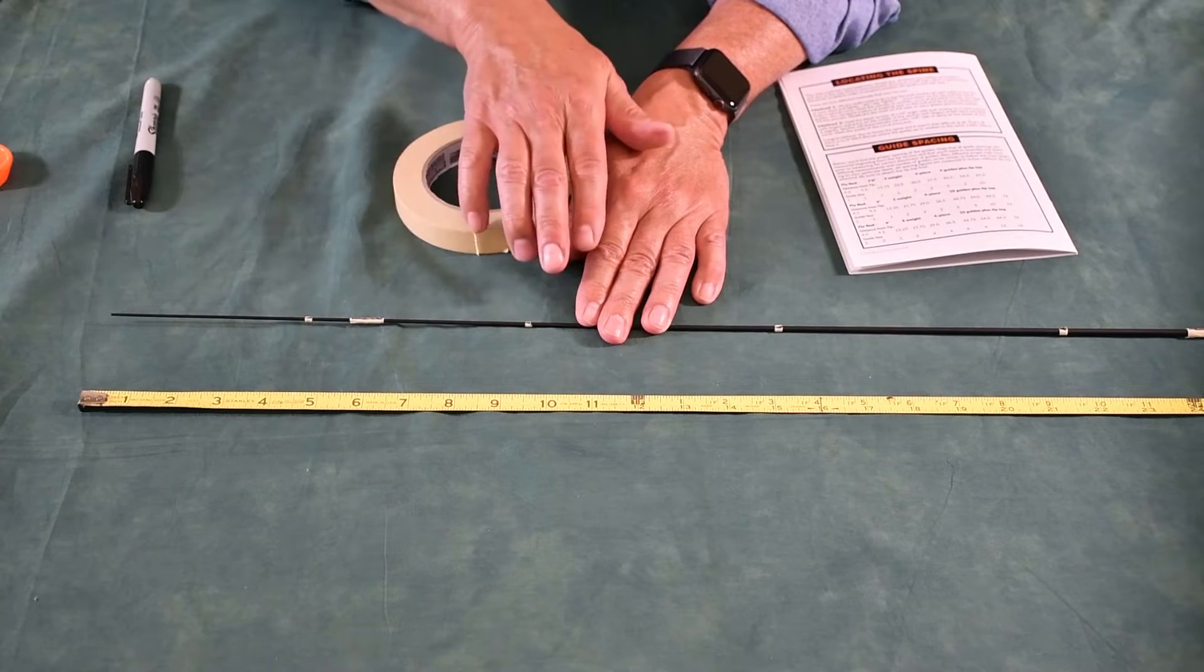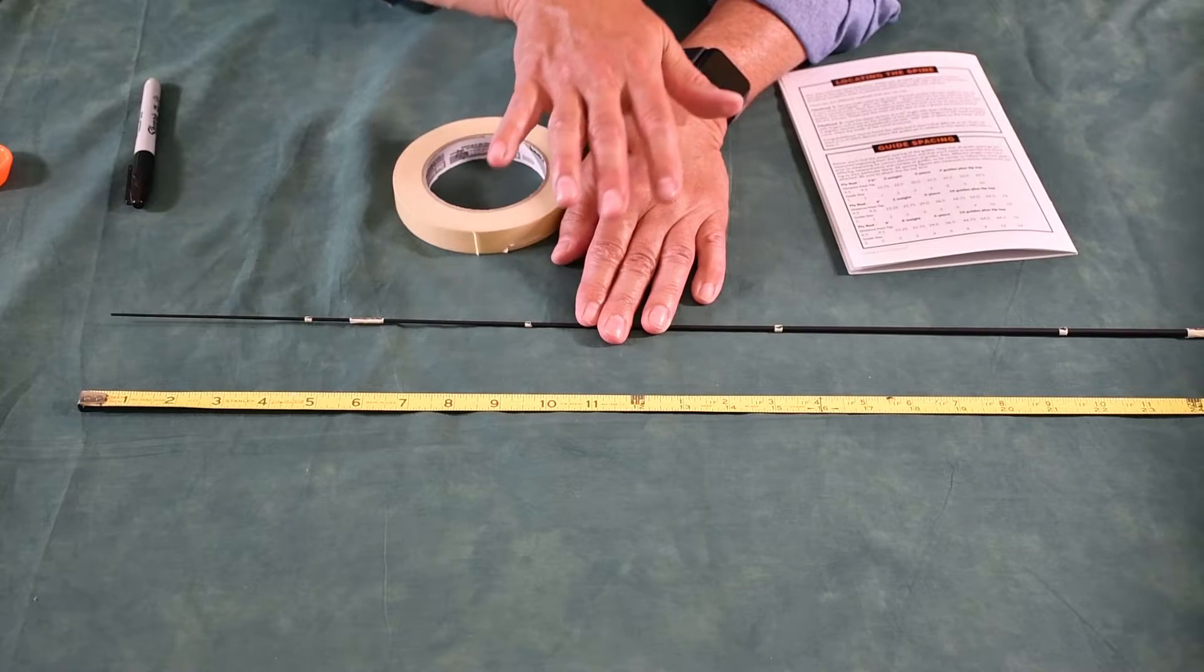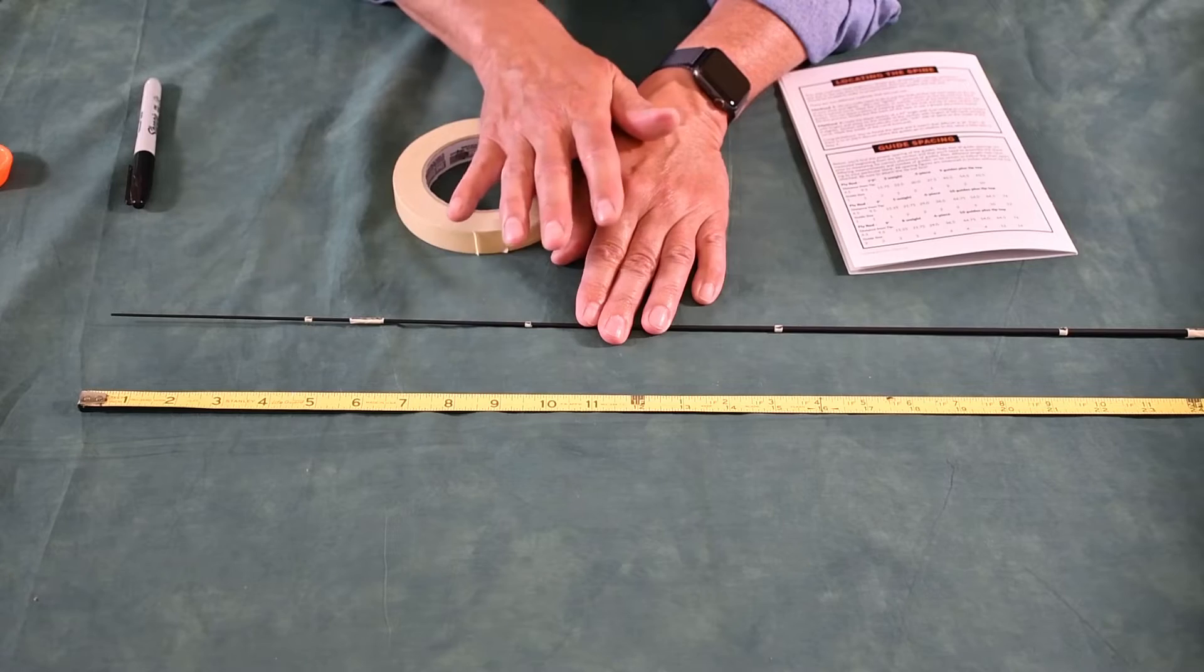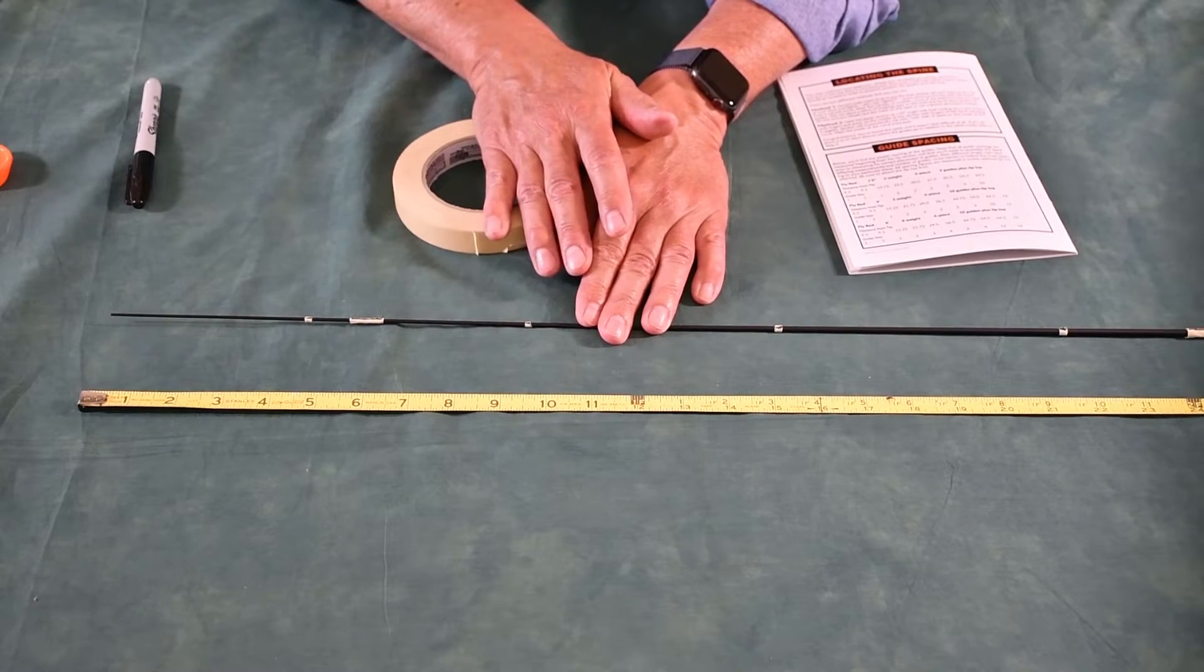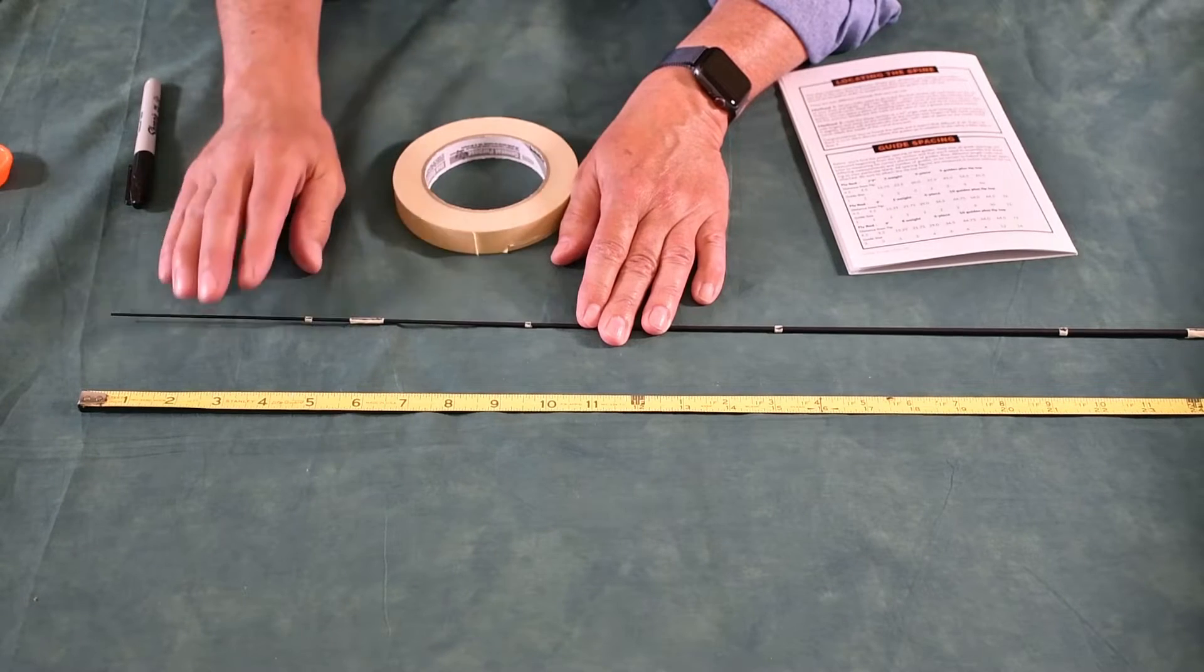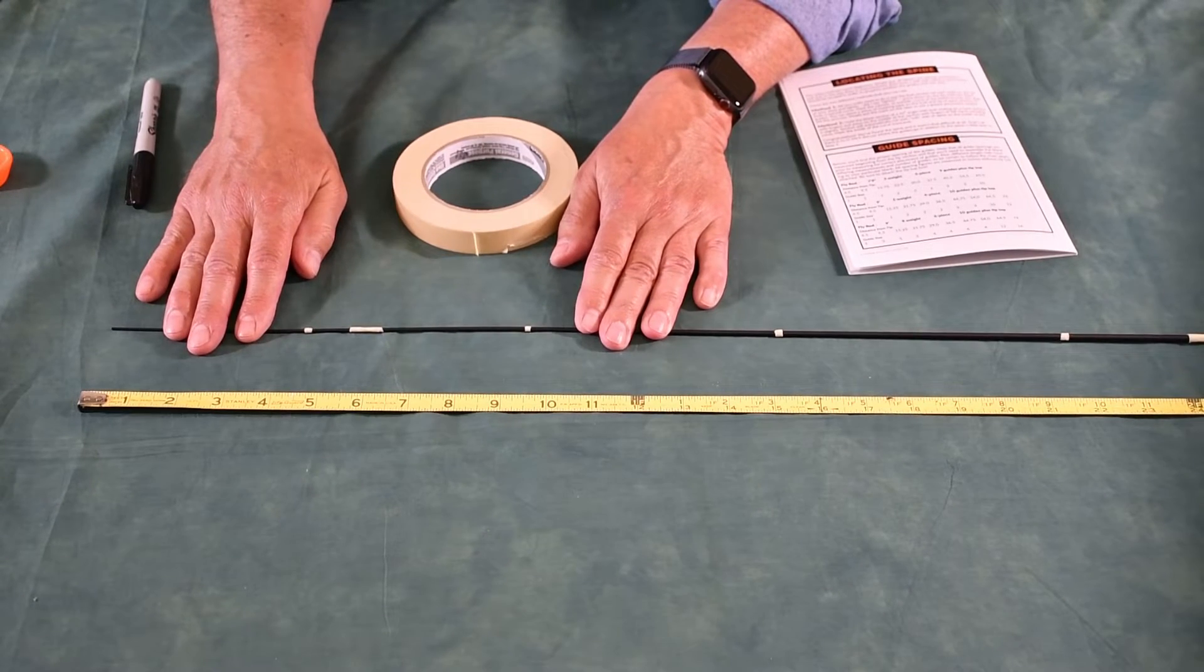Remember, on heavier weight rods, 8 weight, 9, 8, 10 weights in fly or a medium heavy or heavier action in spinning and casting, we're going to put the guides right on the spine. On lighter weight rods, we're going to put it opposite the spine.